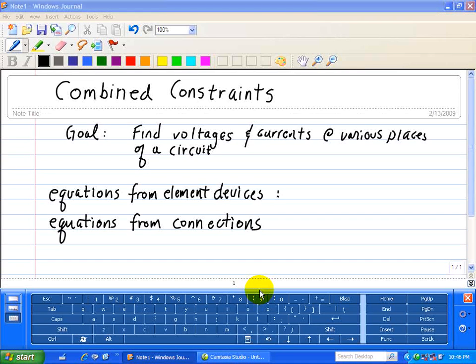Here we're going to talk about combined constraints or equations. Our eventual goal is to find unknown voltages and currents at various places of a circuit. We do this by combining two sets of equations.